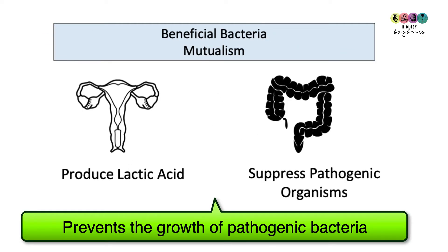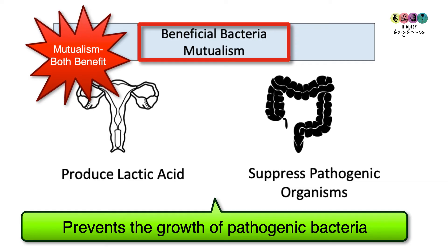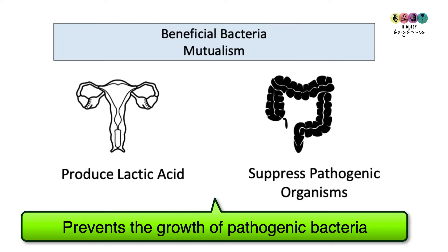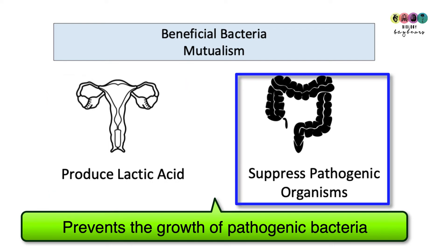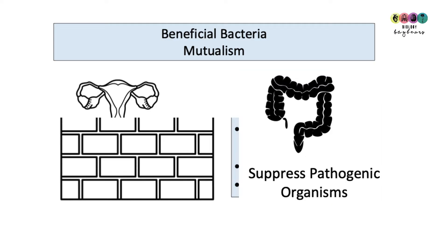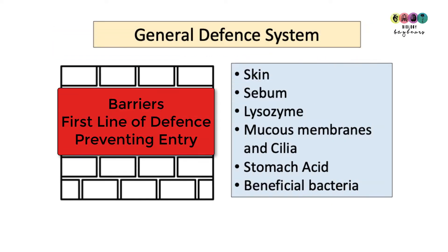Another part of the general defense system is the role played by beneficial bacteria — a mutualism where both parties benefit. For example, bacteria in the vagina produce lactic acid, creating an acidic environment that pathogenic organisms don't like. Also, bacteria in the large intestine suppress the growth of other pathogenic bacteria.